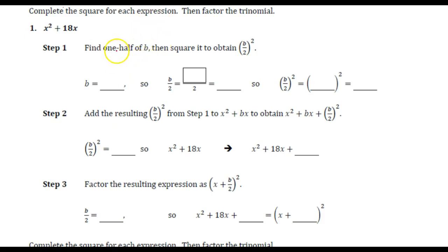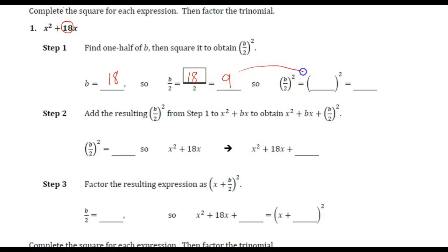The first thing they ask you to do is find one half of b. So this is our b value — 18. What we're going to do is find what half of 18 is, which is 9. We're then going to take that 9 and square it. Go ahead and figure out what 9 squared is — that would be 81.